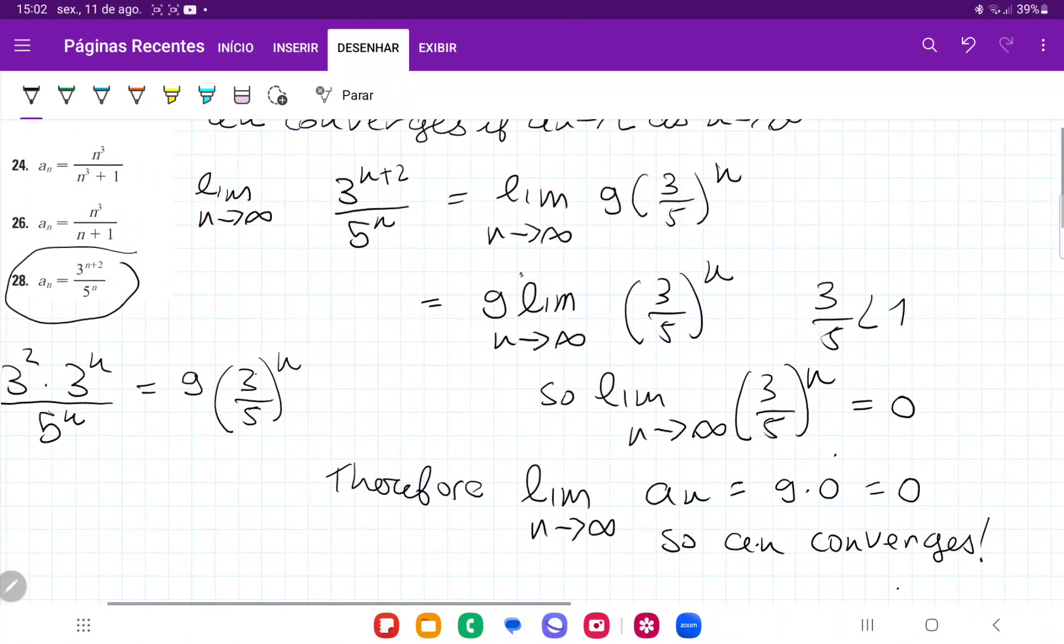And that is it for number 28. And remember that all we did was we algebraically manipulated so we could get it to a geometric series and then kind of look at the ratio, the 3/5, and see that it is less than 1, so it must converge.